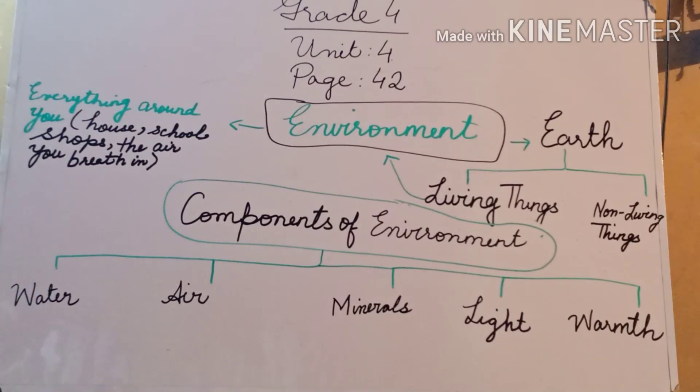Today we are going to start with Grade 4 Unit 4: Environment and Food Chain. Your page number is 42. Before starting the chapter, first of all I am going to give you a brief overview of the chapter.